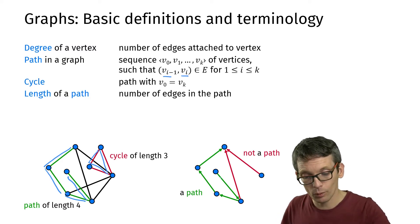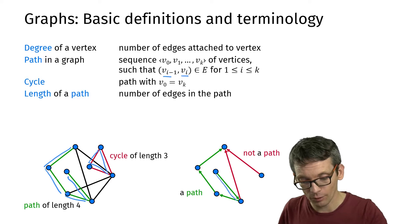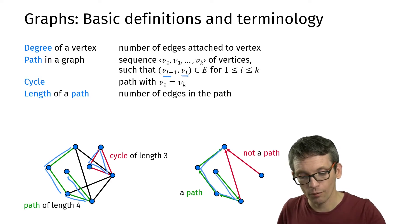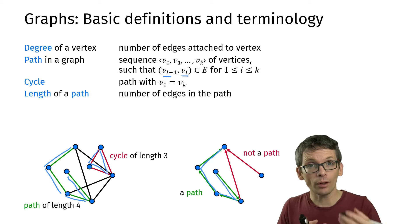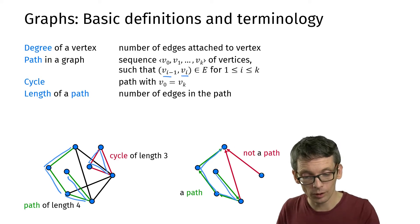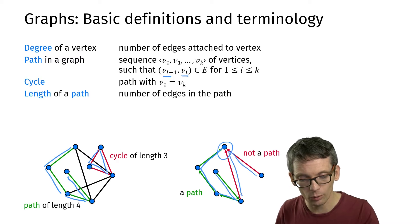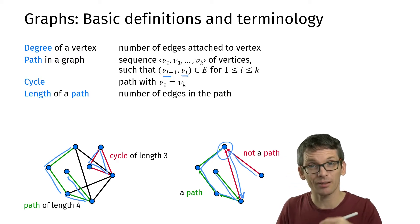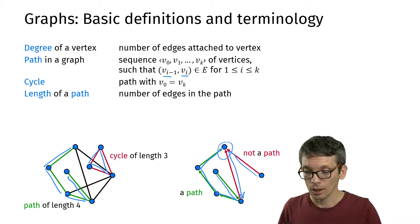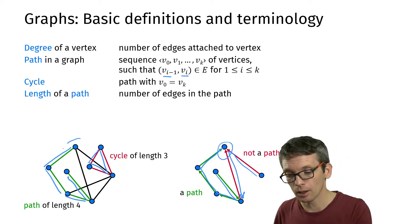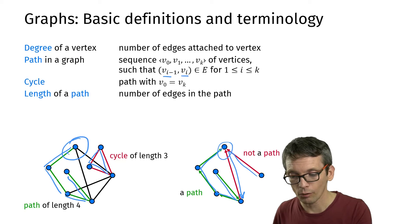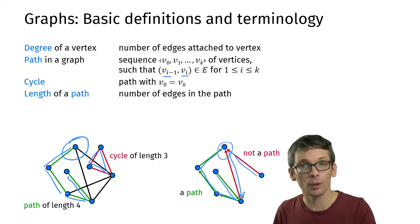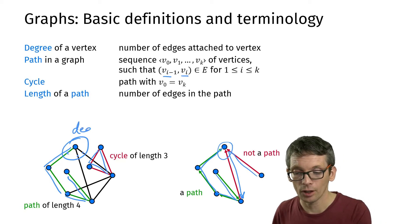In the directed graph, the green path is a path of length 4. The red edges do not form a path because both point in the same direction, so I cannot traverse them as a sequence. Also looking at degree: this vertex here has degree 3 because it has three edges attached to it.